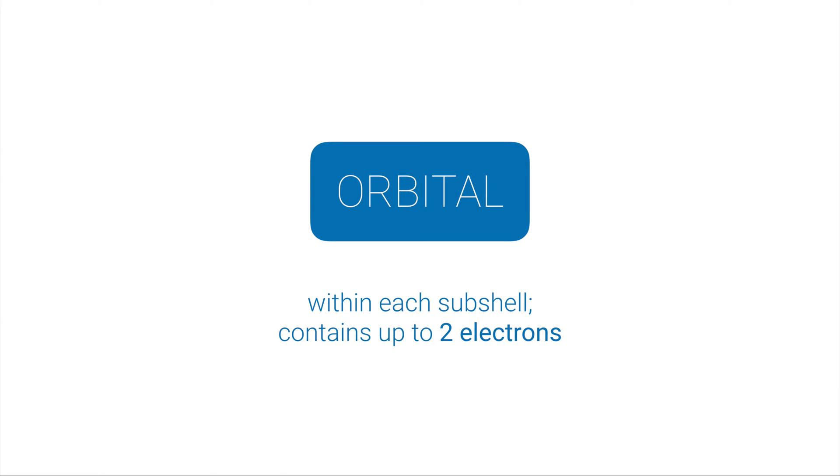There's a reason for that. Each subshell contains a certain number of orbitals — an orbital is something within a subshell that contains up to two electrons. Think of it this way: a shell is like a town, a subshell is like a road in that town, and an orbital is one of the houses on that road. An address has a number on a street in a city — the orbital is the number, the subshell is the street, and the shell is the city.